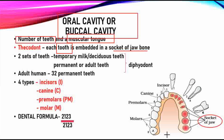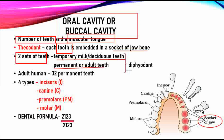In terms of teeth arrangement, we have two sets of teeth. The first is temporary milk teeth, also called deciduous teeth. The second is permanent or adult teeth. Because we have two sets of teeth in our lifetime, this condition is called diphyodont. We first form temporary milk teeth and then permanent teeth — that is why it is called diphyodont.